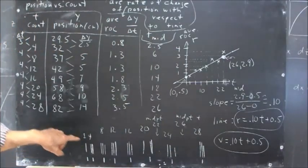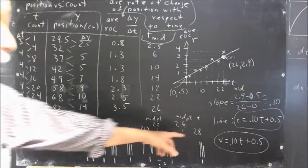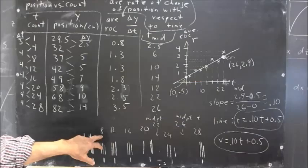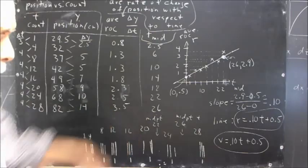We're going to mark the positions of that ball at more or less equal time intervals. Time intervals indicated by these numbers here, or the clock times indicated by these numbers.